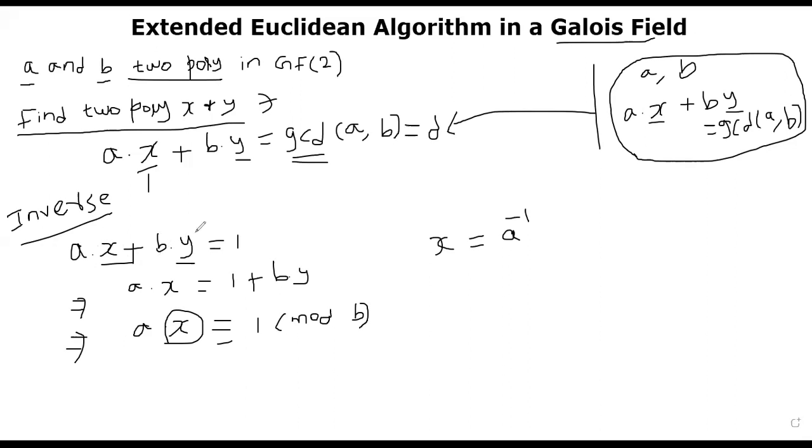So A times X plus B times Y equal to 1. And I can push the B times Y to the right-hand side. Since plus and minus are same in Galois field, we can write it as A times X is equal to 1 plus B times Y. And if you apply mod B on both sides, you can see here A times X is congruent to 1 mod B.